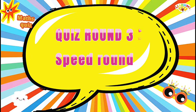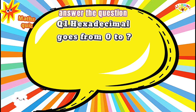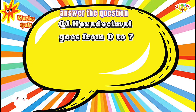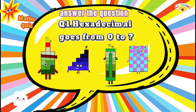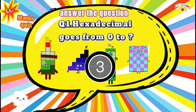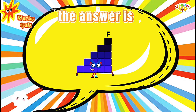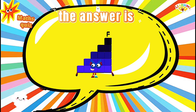Quiz Round 3 — Speed Round. Question No. 1: Hexadecimal goes from 0 to? Options: 11, F, 1E, 3C. The correct answer is F.